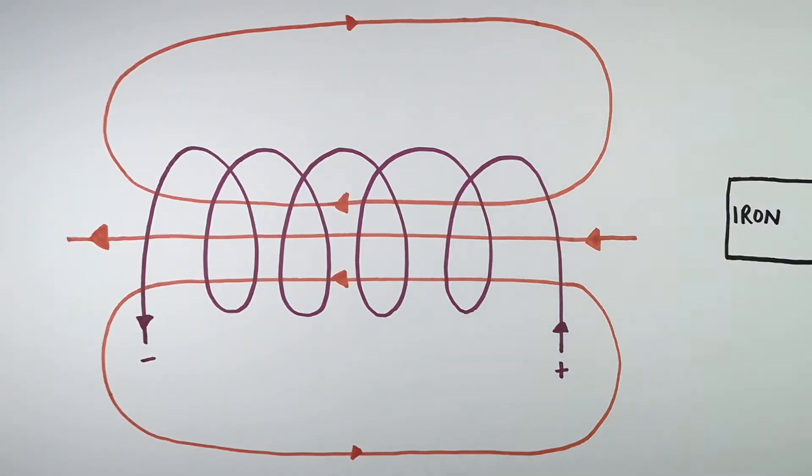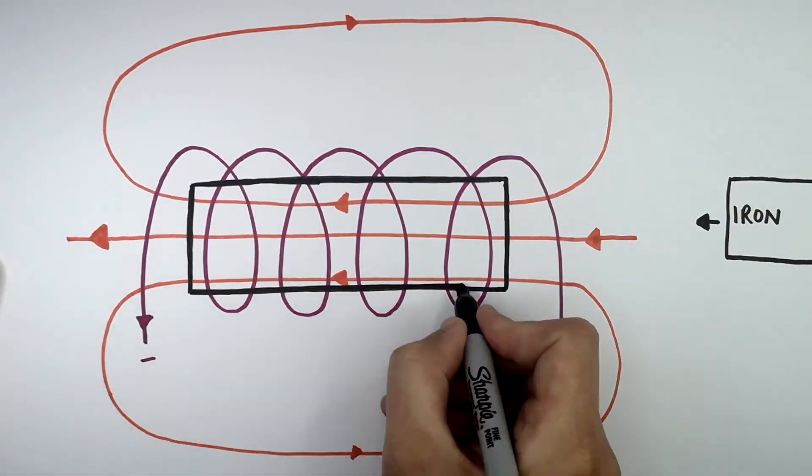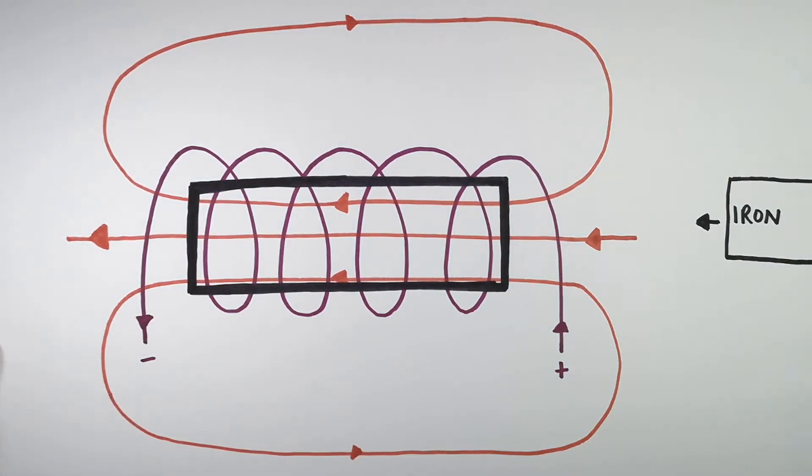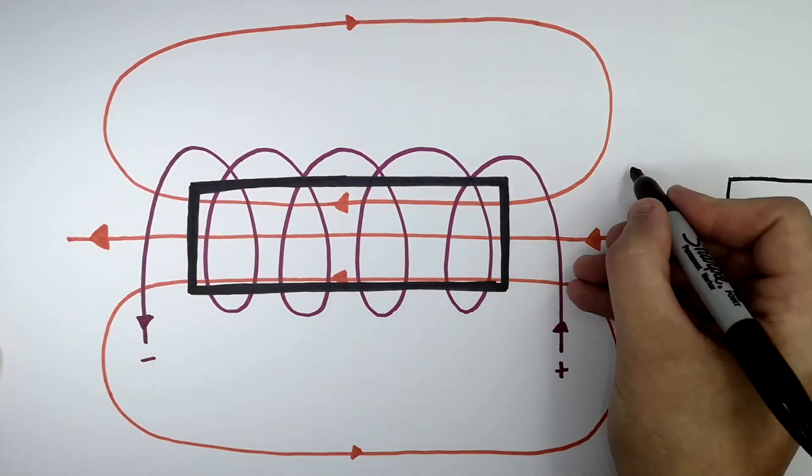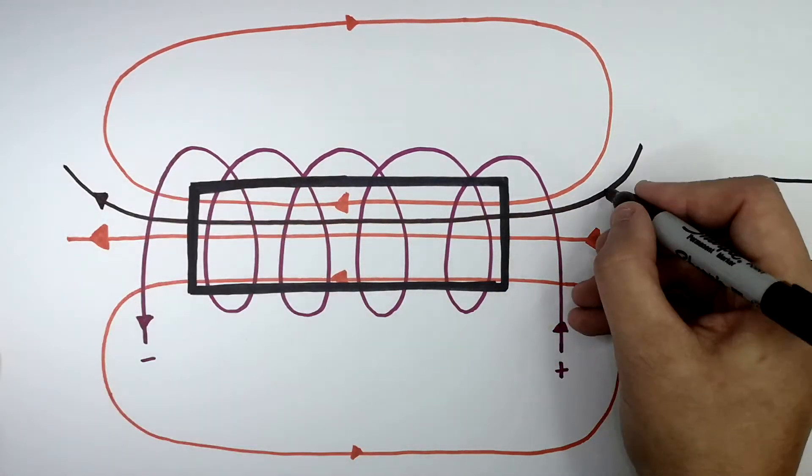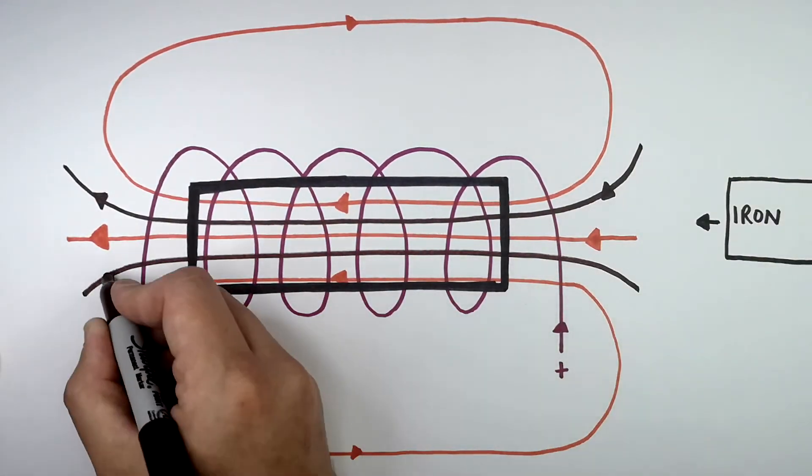This here is a block of iron. If we put the block of iron into the middle of the solenoid, you've now got an electromagnet. The field strength inside the electromagnet is going to increase. You can see that by there being more magnetic field lines drawn and them being closer together.